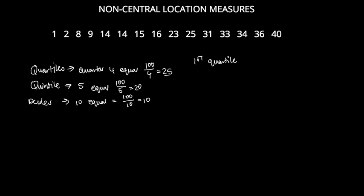To calculate the first quartile, we want to know which data values constitute the first 25 percent of our data set. We divide 25 by 100 to get 0.25 and then multiply it by n plus 1. We'll always use this formula whether we're working with quartiles, quintiles, or deciles.